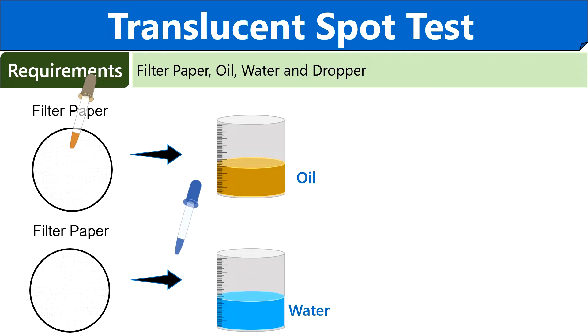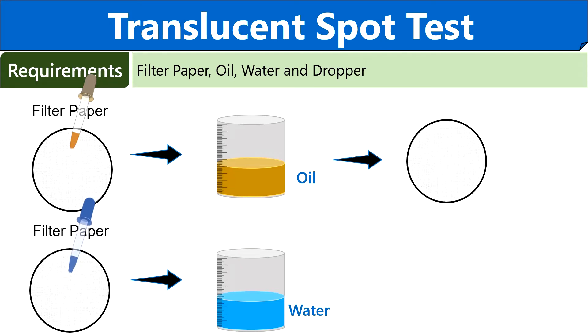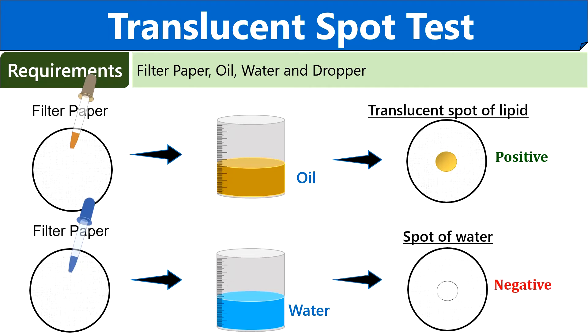After that, add a drop of water to the filter paper. After some time, you can see a translucent spot on the filter paper and the test is positive for lipids. A colorless spot indicates the absence of lipids and the test is negative.